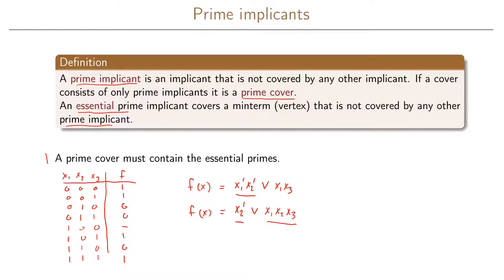However, x2 prime is a prime implicant and x1 x3 is also a prime implicant. So both of these functions will consist of one prime implicant and one implicant that is not a prime.